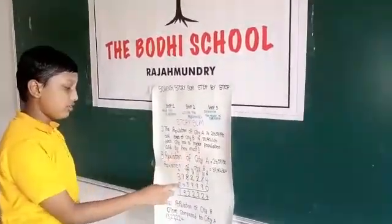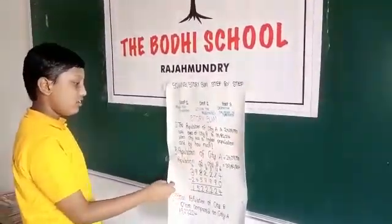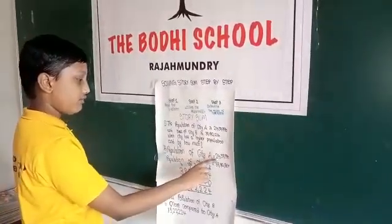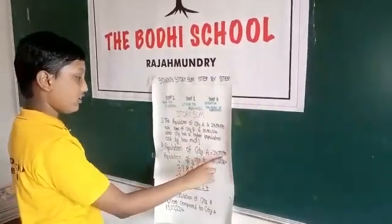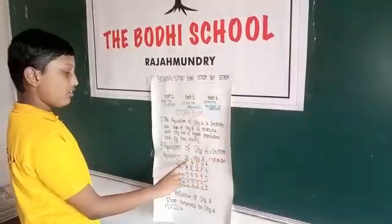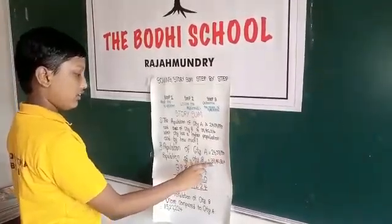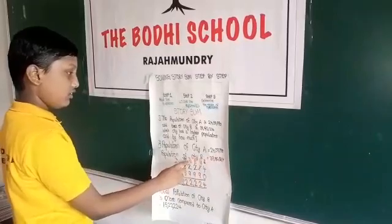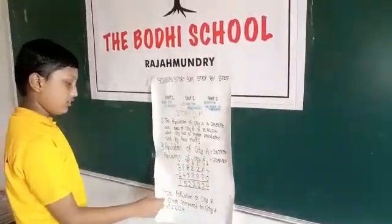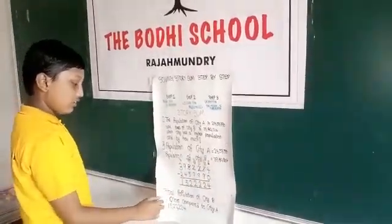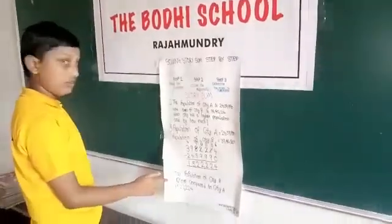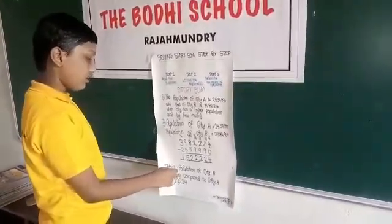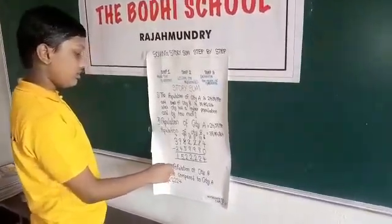'By how much' means we should do subtraction. Population of City A is equal to 24,59,990. Population of City B is equal to 39,82,240. So we should do subtraction. The difference is 32,222.